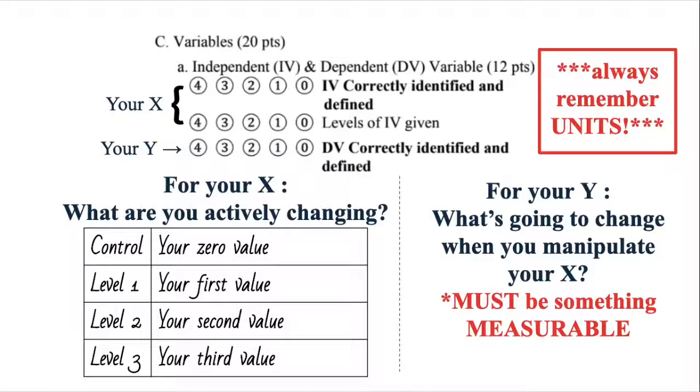For example, if you're testing solubility of sugar in water, you're going to give out your zero value or your control, as in not putting in any sugar at all. And then your first value, let's say five grams of sugar, and then 10 grams of sugar, level two, and then level three, 15 grams of sugar, or something like that. The amount of sugar is what you're actually changing, and that's going to be your independent variable.